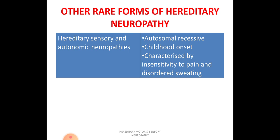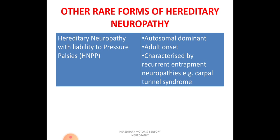Hereditary sensory and autonomic neuropathy (HSAN) affects both sensation and the autonomic nervous system. Genetically it is autosomal recessive, and the disease starts in childhood. Clinically it is characterized by insensitivity to pain, because the sensory component is affected, and there will also be a disorder of sweating because the autonomic nervous system is affected.